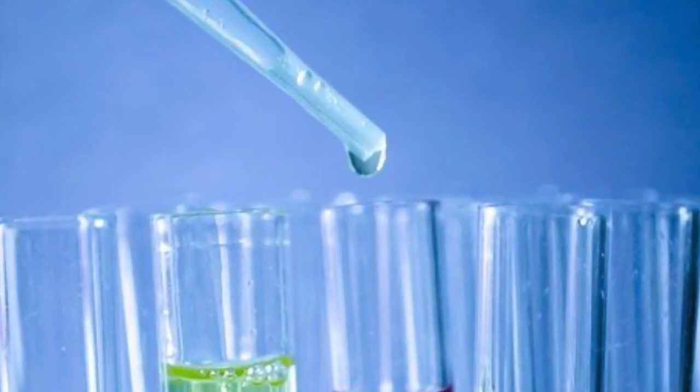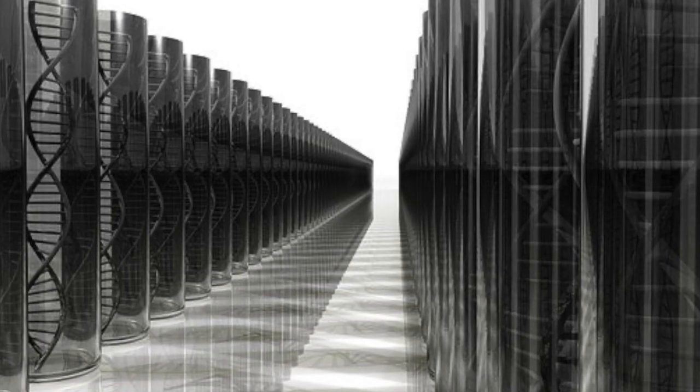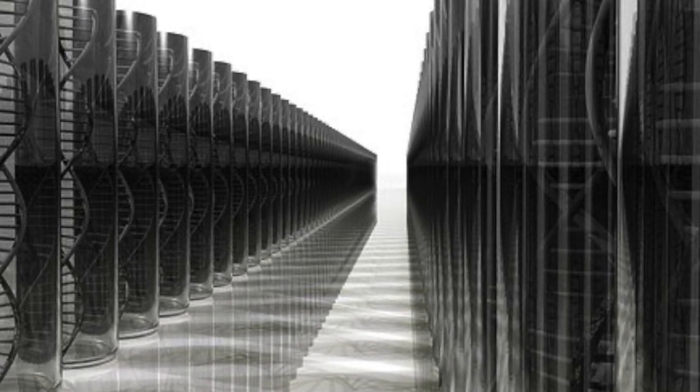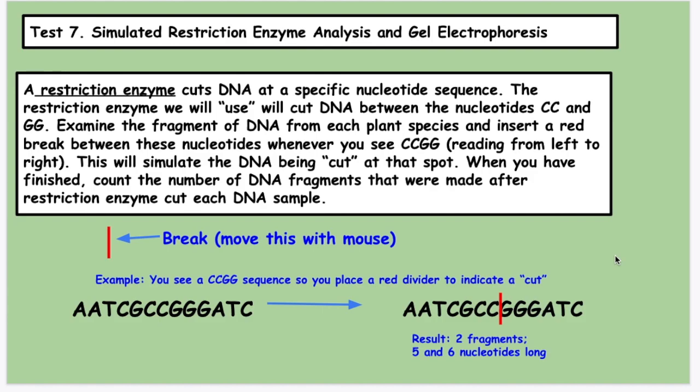Last test deals with some review of biotechnology techniques. We're looking at restriction enzymes and gel electrophoresis. First, what is a restriction enzyme? A restriction enzyme is an enzyme that cuts DNA at a restriction site. A restriction site is a very specific sequence of DNA where the restriction enzyme cuts. Here's CCGG. In our lab, the restriction enzyme is going to cut right in between the C's and the G's. So wherever the enzyme recognizes CCGG, it cuts right in the middle.